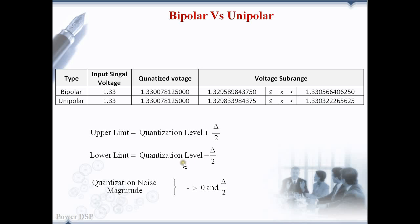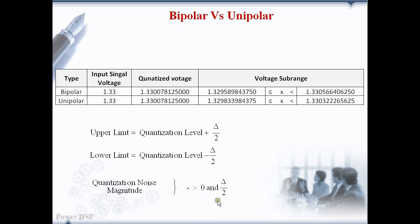The input voltage always lies either between the upper limit and the quantization level, or between the quantization level and the lower limit. So the quantization noise magnitude always lies between 0 and half the step size.